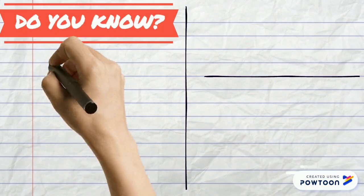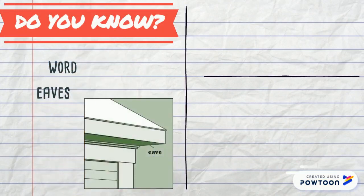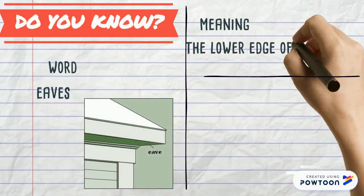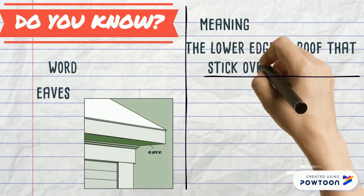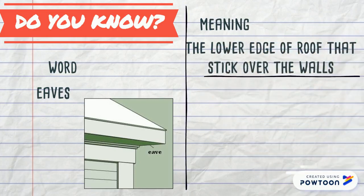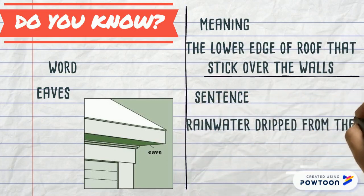The fifth word is eaves. Its meaning is the lower edge of the roof that sticks over the wall. Sentence is rain water dripped from the eaves of the cottage.